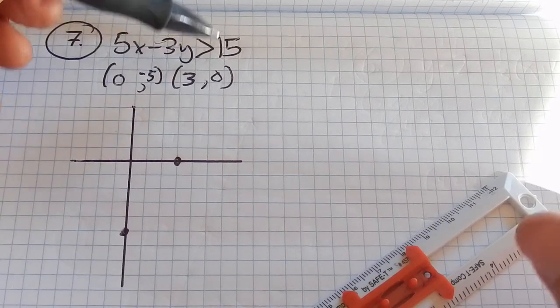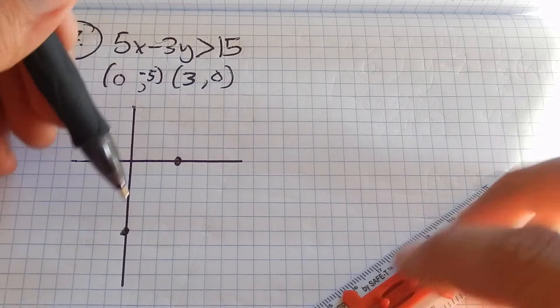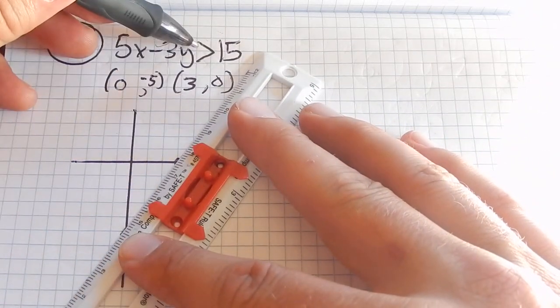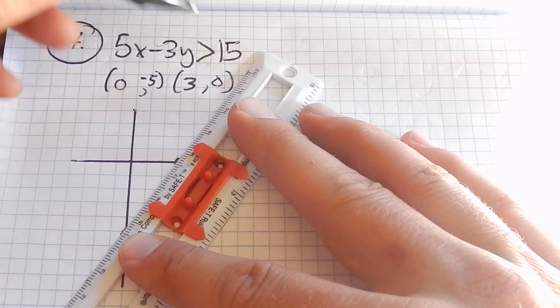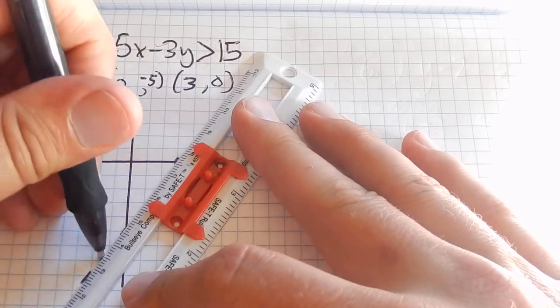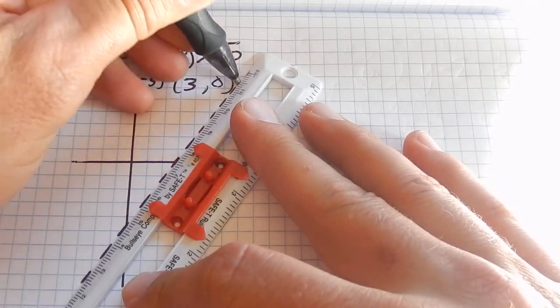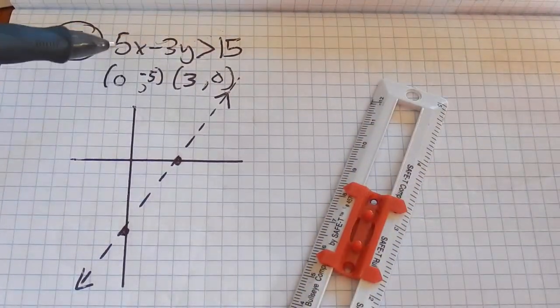Now I have to be really careful about my symbol. This is strictly greater than. So the points on this line are when it's equal to. That's not true in this case. This is strictly only greater than that. So instead of a solid line, I'm going to use a dashed line. That shows that that is the boundary, although the boundary is not part of the solution.